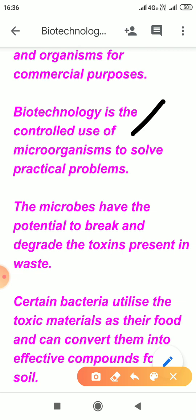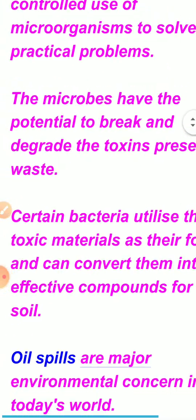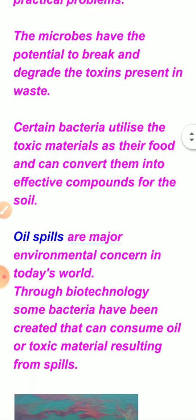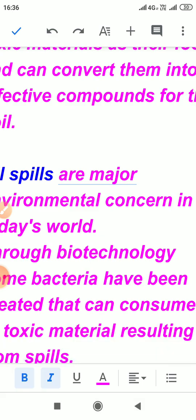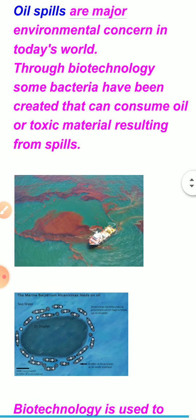Through the controlled use of microorganisms, we can solve many practical problems — such as wastewater treatment, gas treatment, and production of hydrogen. This is possible because microbes have the potential to break and degrade toxins. Many bacteria convert toxic materials into effective compounds for the soil. Oil spills — when oil leaks into rivers, seas, or oceans — are a major concern because they disturb the life of marine organisms. Through biotechnology, many bacteria have been created that eat that oil, completely eliminating it from the water.